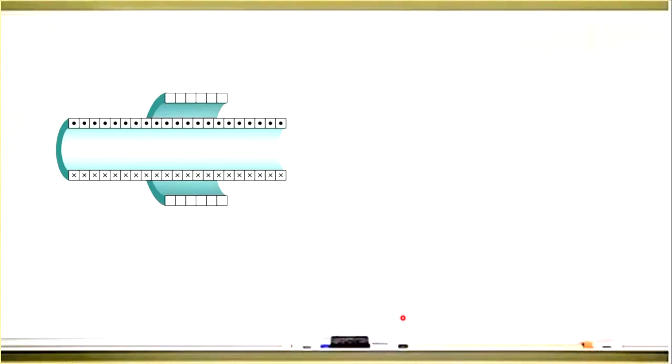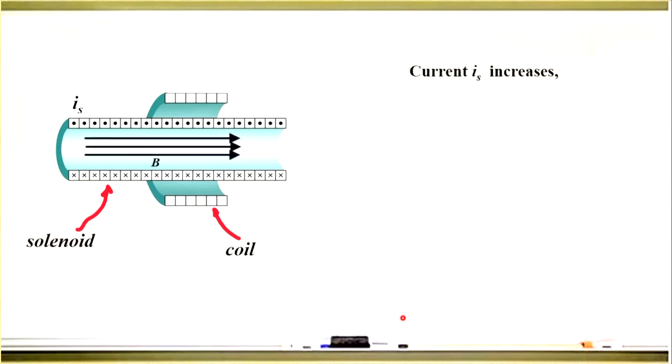Let us consider a solenoid and a coil around this solenoid. There is a current in the solenoid. This current generates a magnetic field, and if the current increases, the magnetic field also increases.